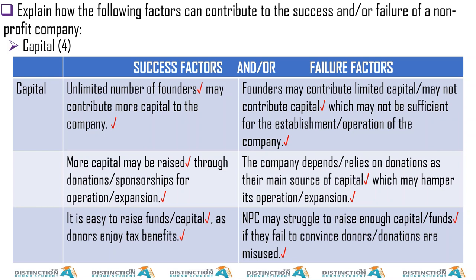For grade 12, after knowing this — which is grade 10 and 11 information — upon knowing this, you must know advantages and disadvantages of each form of ownership. But most importantly, we want the factors that can influence the success or failure of each form of ownership. So you must know success factors and failure factors related to capacity, management, tax, capital, division of profits, and legislation.